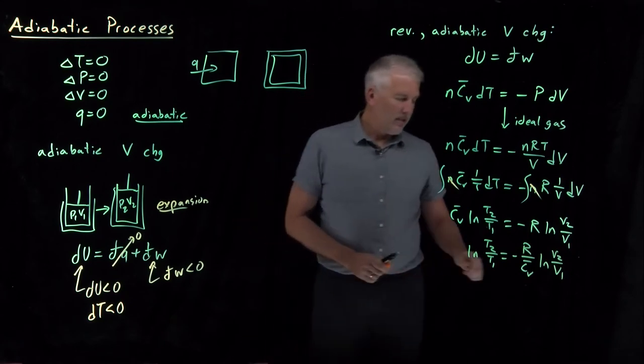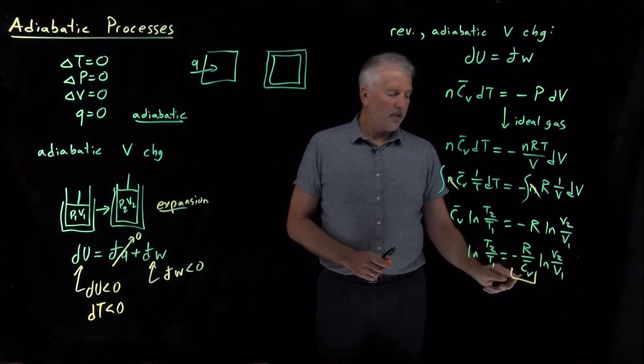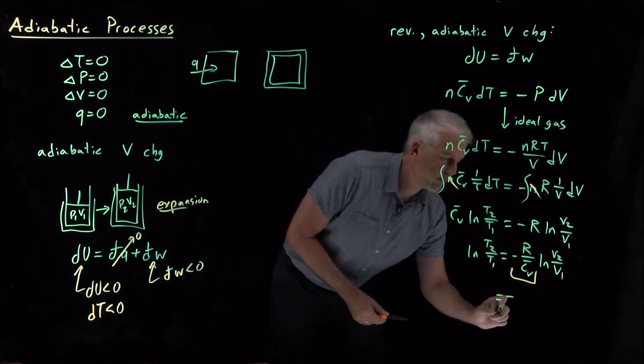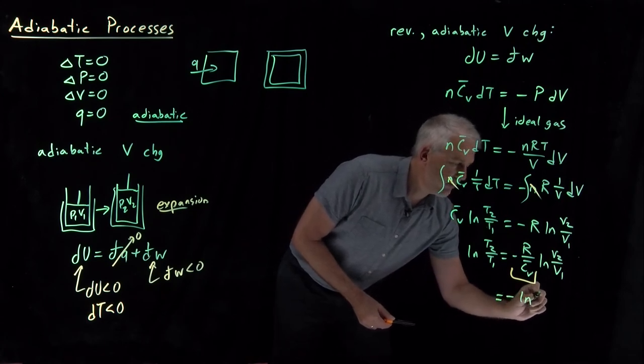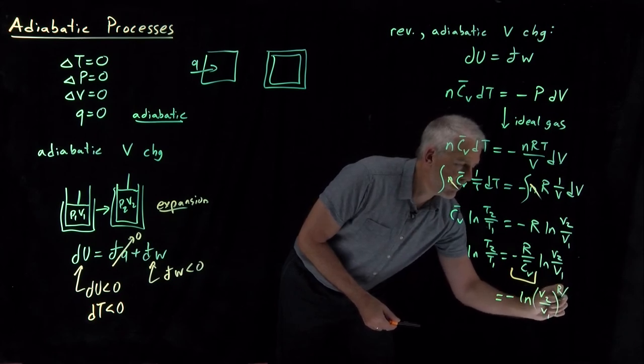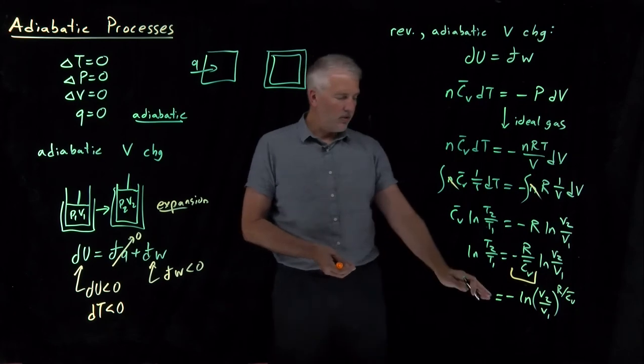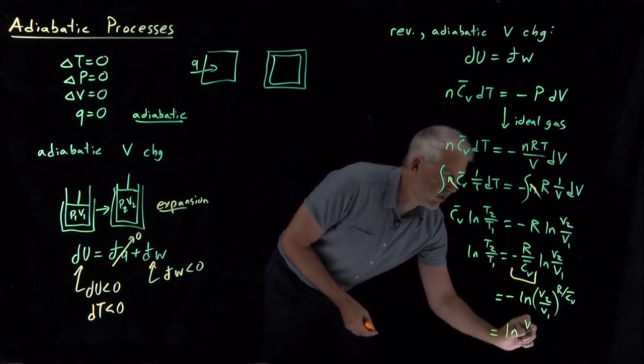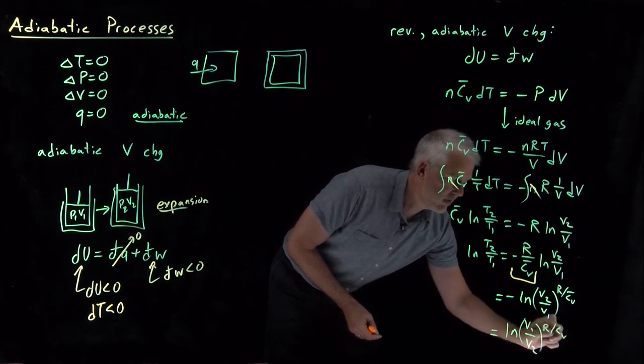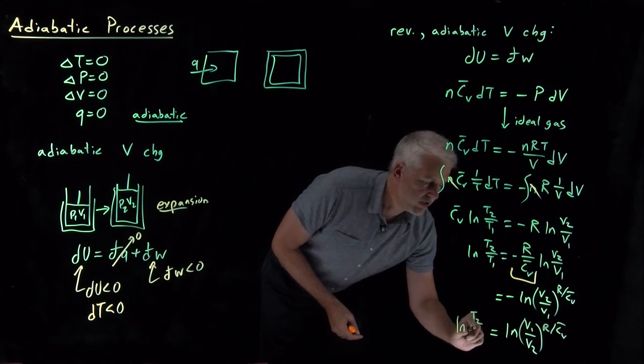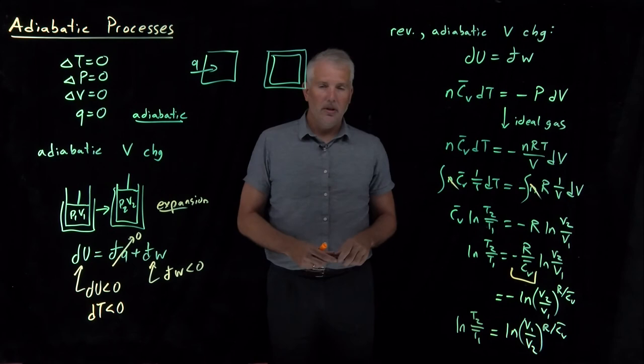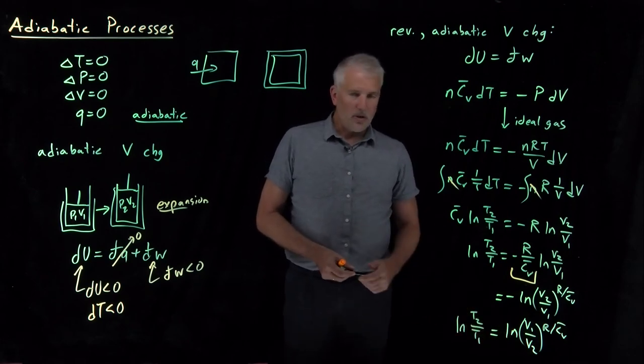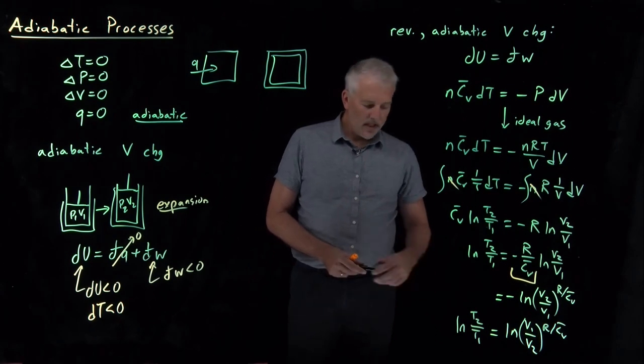This term looks like a number multiplying this logarithm. So a constant times the log is equal to the log raised to that constant. So I'll rewrite this. Let's leave the negative sign out front. Negative log of V2 over V1 raised to the R over Cv bar power. And I'll use one more log rule to say the negative of a log is equal to the log of the inverse. So instead of V2 over V1, I've actually got log of V1 over V2 if I use a positive sign. So log of T2 over T1 is equal to log of V1 over V2 raised to that power R divided by Cv. And now I've got log on the left, log on the right, which I can remove both those logs, essentially exponentiating both sides of that equation. And then that will be our final result.